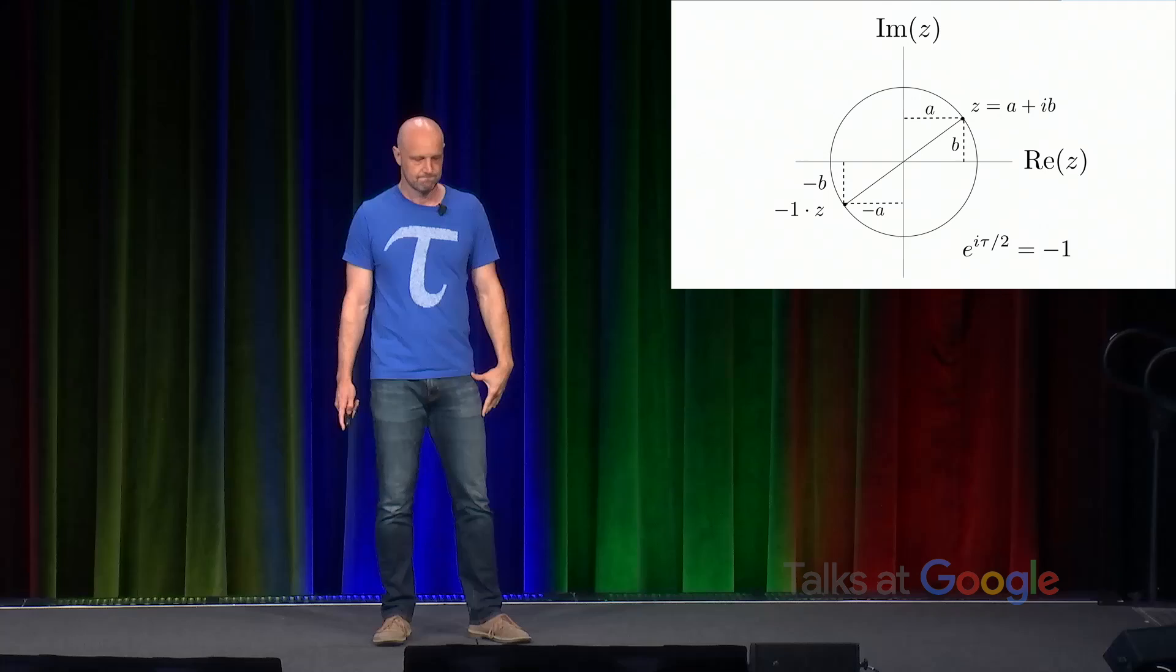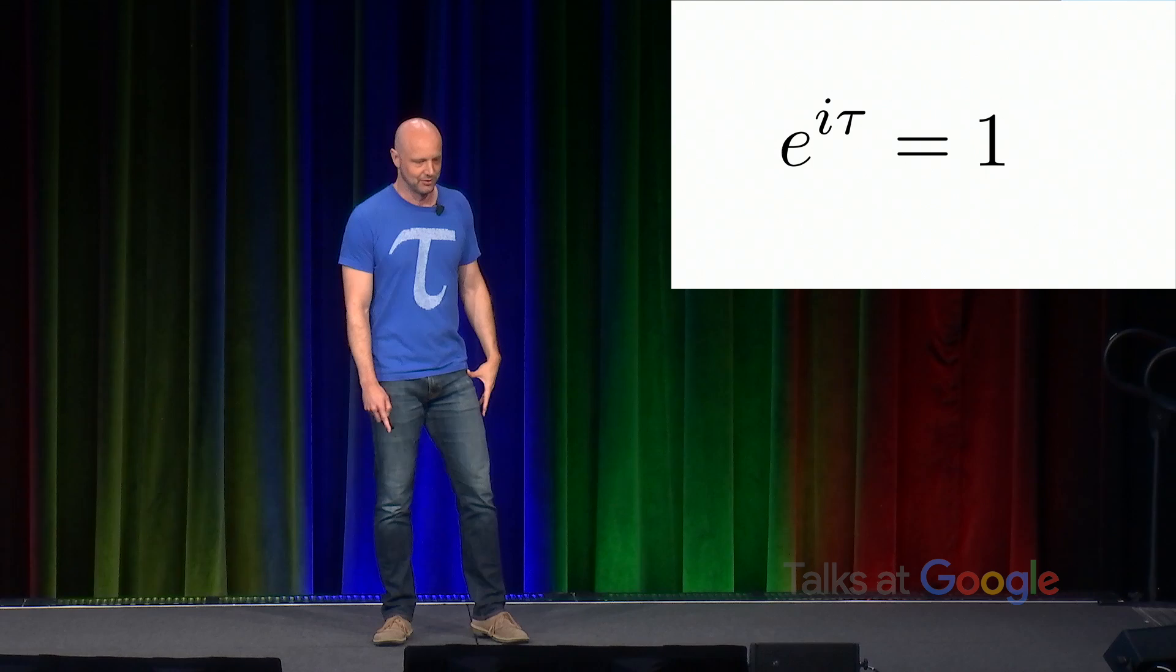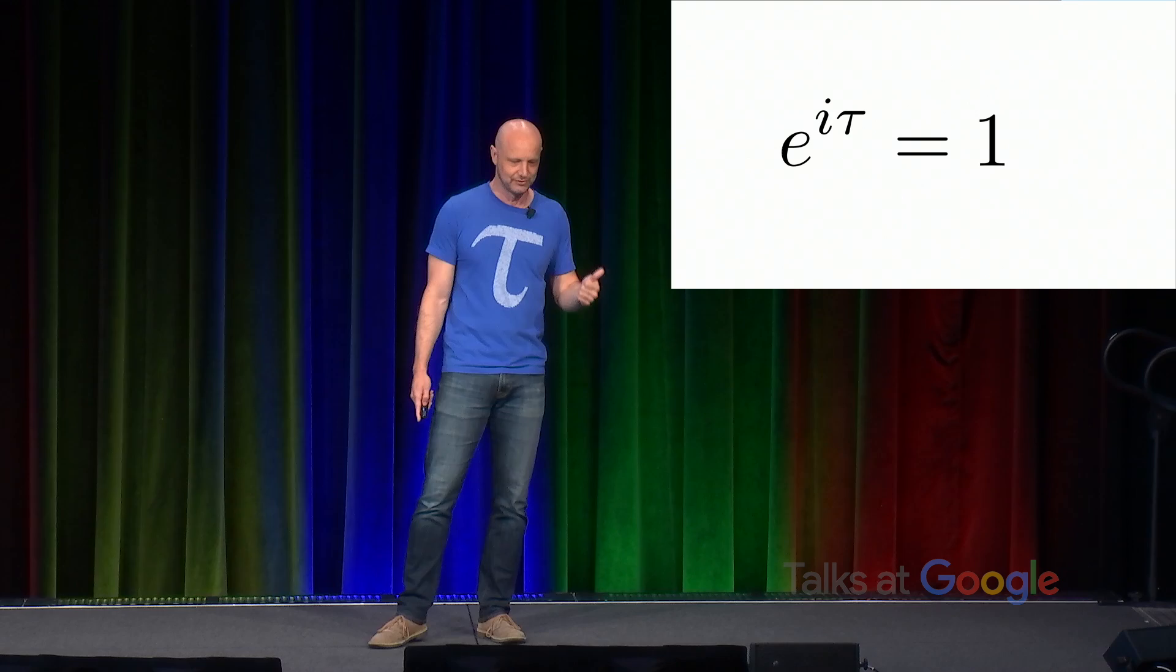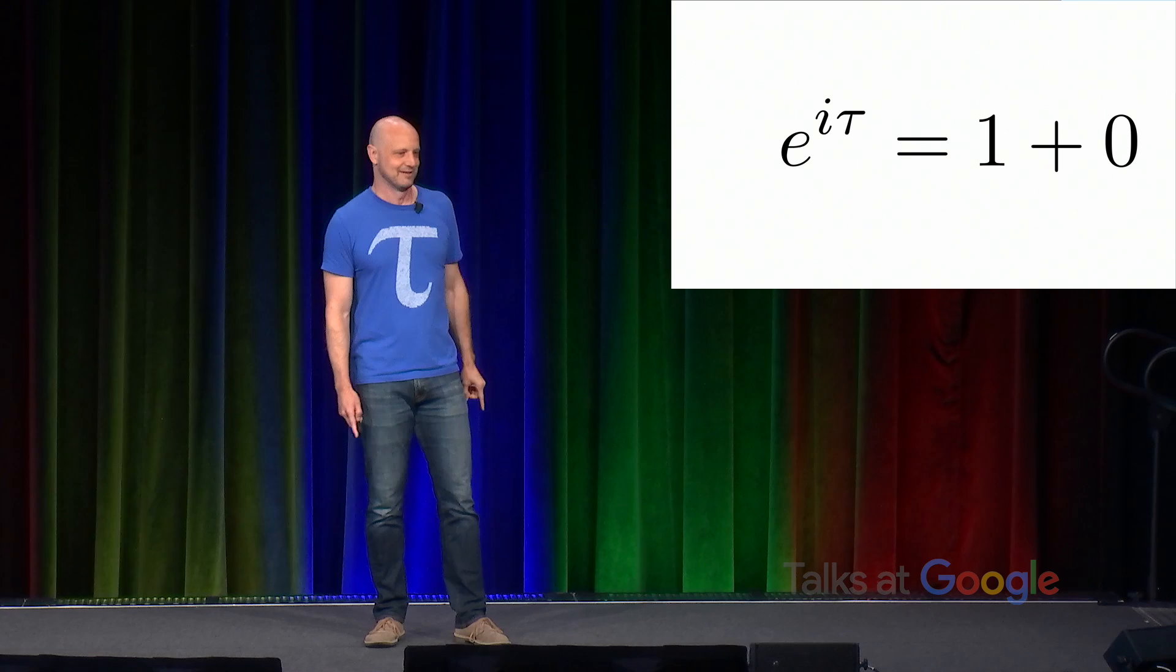So I believe this really ought to be called Euler's identity. People do have a tendency to get all numerological about it, though. And it's amazing how many people complain that this formula relates only four numbers. So in this context, I would like to note that E to the I tau equals one plus zero. So I assert that this equation actually does unite all of the five most important numbers in mathematics, zero, one, I, E, and tau.